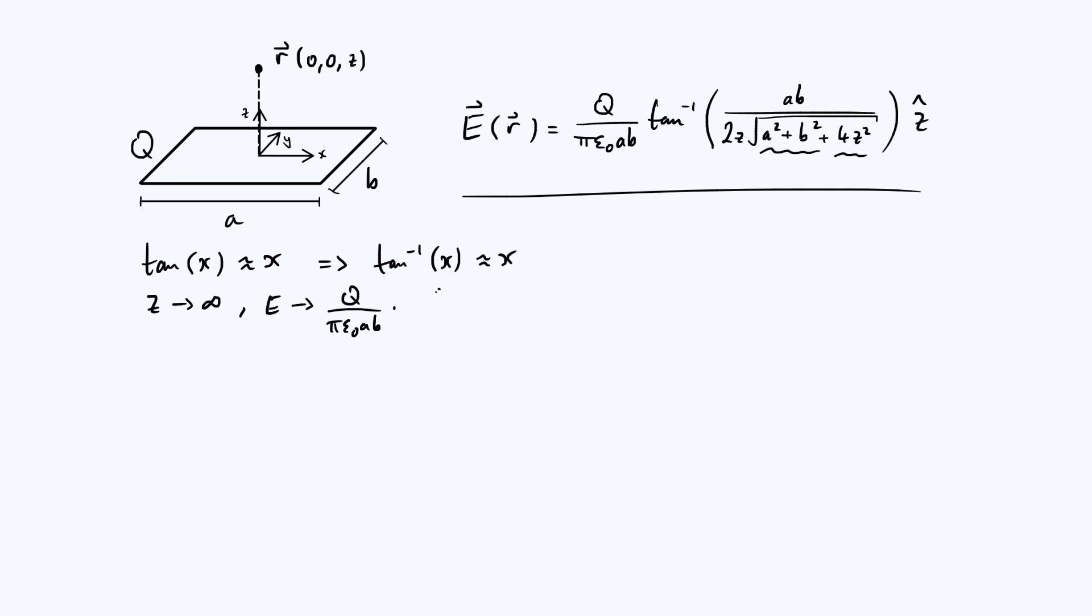And so what we're multiplying by is essentially the ab still has to be there on the top, the 2z in front of the square root still has to be there. But then you neglect the a squared plus b squared, and you get the square root of 4z squared, which itself is just 2z. So we get ab over 2z times 2z.